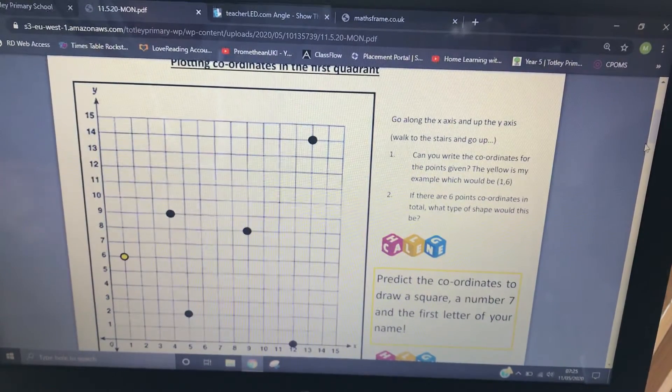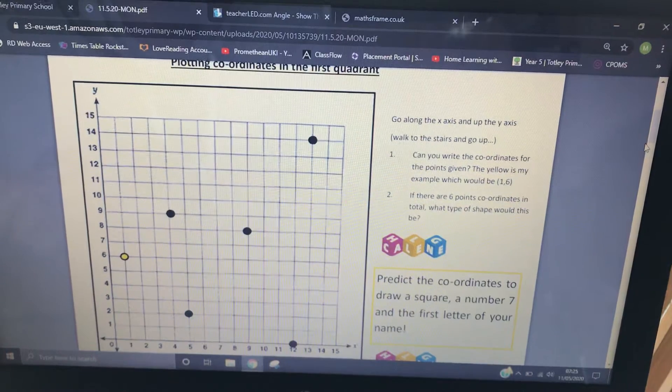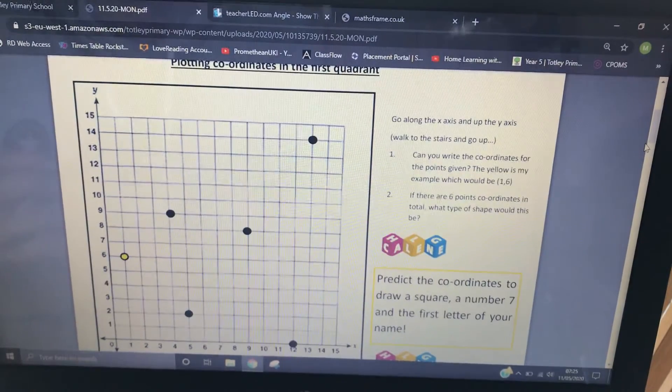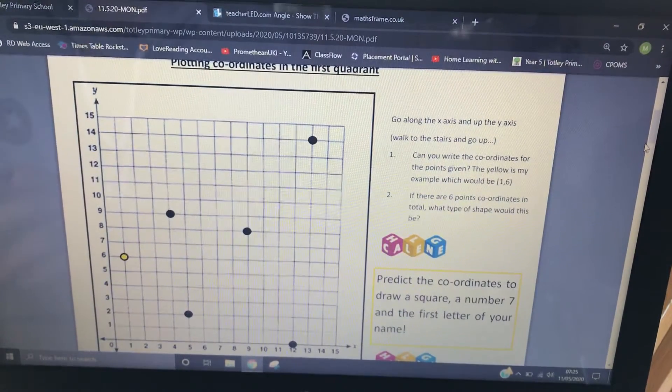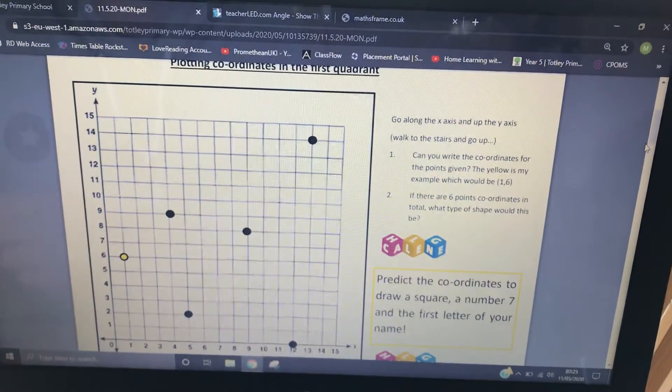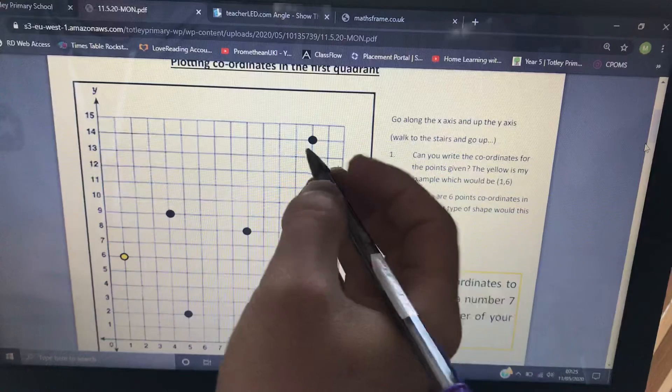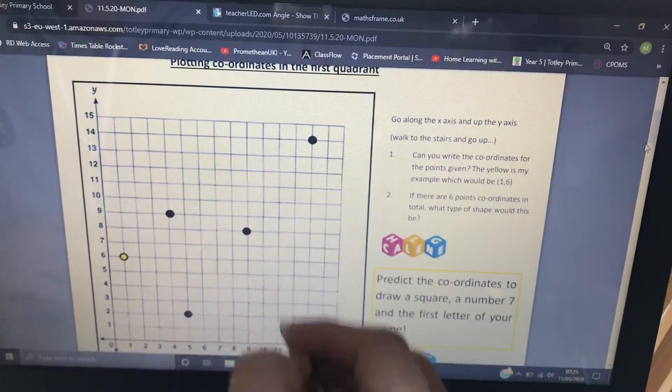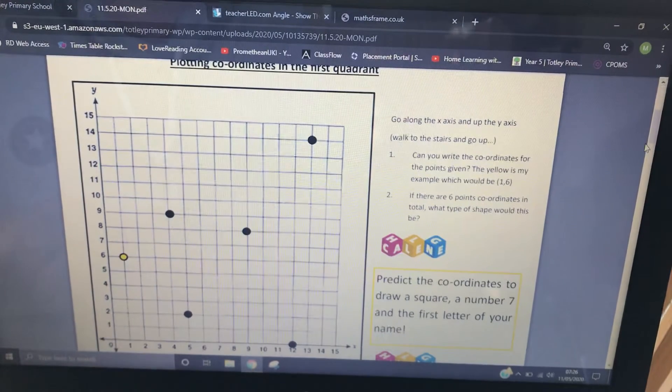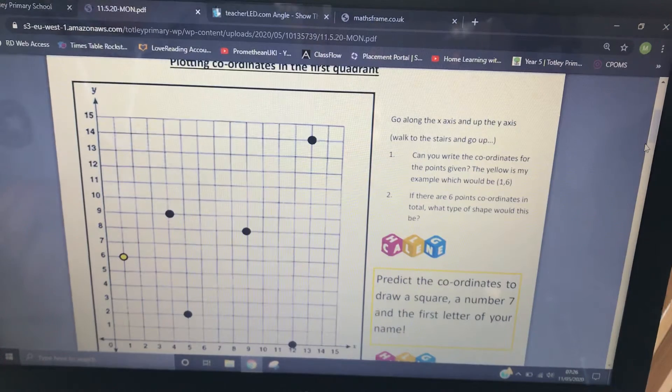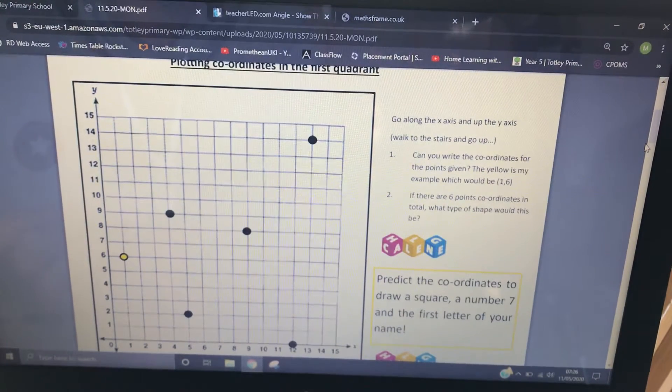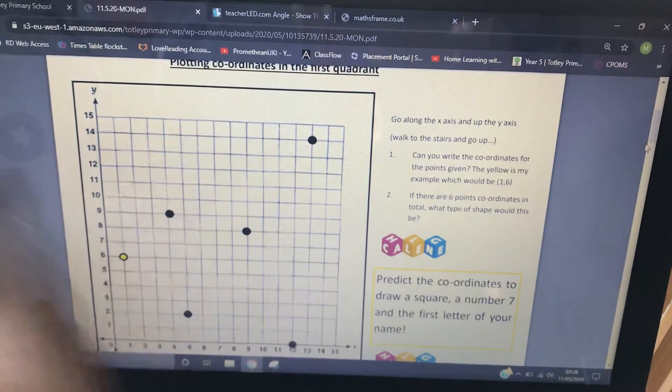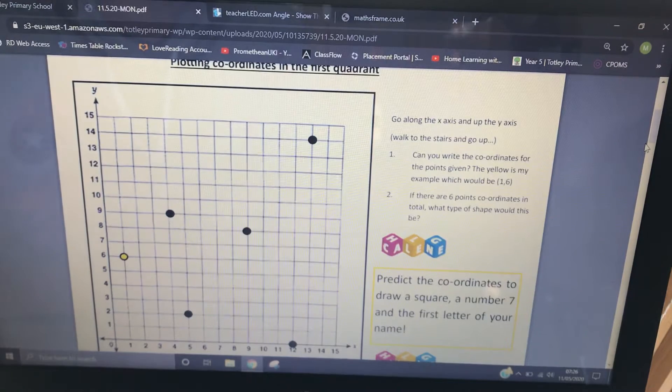Two. If there are 6 coordinate points in total, what type of shape would this be? So if there are 6 coordinate points, when you draw them up, however you draw them up, you could draw them that way, that way, that way, however you do it, there are 6 corners. Which means there are 6 sides. So this is going to be an irregular hexagon. All the sides are different lengths. Angles are definitely not the same. So it's an irregular hexagon.